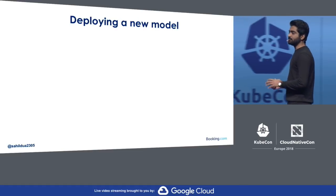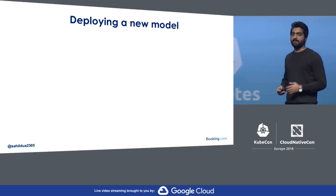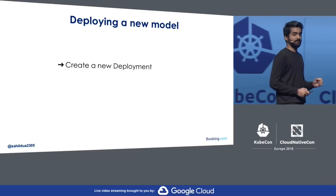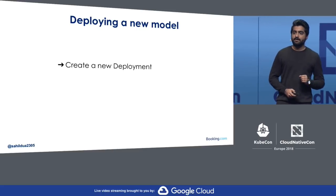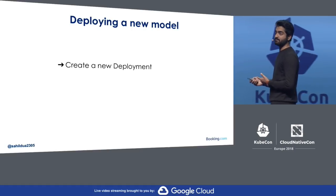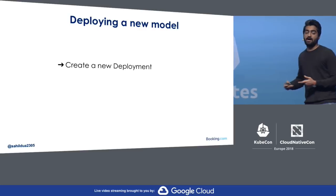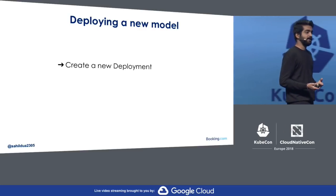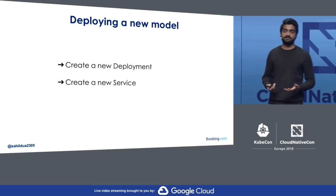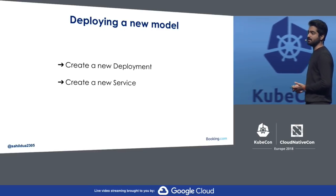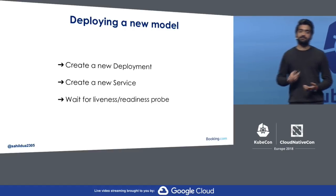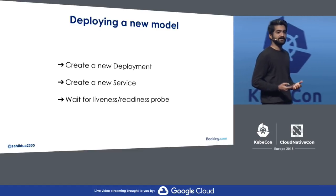To create a new model deployment, we create a deployment object which specifies the pod configuration — where it needs to get the data from, where it needs to get the model from, and how it needs to get started. Once we have the deployment running, we create a new service to expose these pods and wait for the pods to pass their liveness and readiness probes before they can start serving traffic.